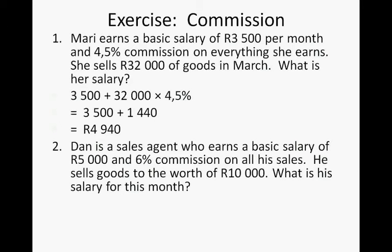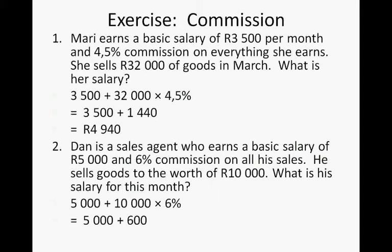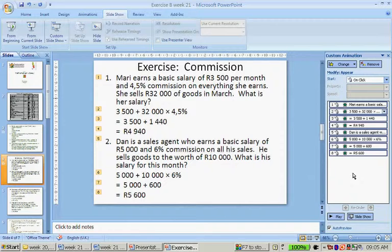Dan is a sales agent who earns a basic salary of $5,000 and 6% commission on his sales. He sells goods worth $10,000 for the month — what is his salary? It's $5,000 plus $10,000 times 6%. $10,000 times 6% is $600. So his salary for the month was $5,600.